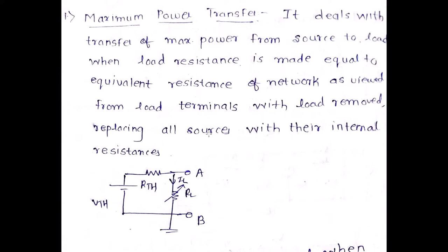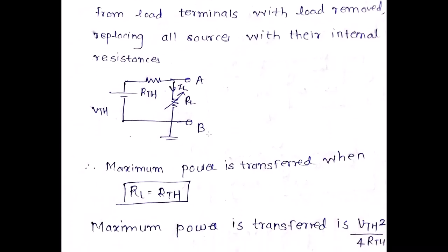So RL = Rth. As mentioned, we find the equivalent resistance from the AB terminals by keeping RL open, short-circuiting the voltage source, and open-circuiting any current source. The maximum power transfer formula is: P_max = Vth² / (4 × Rth), where Vth is the Thevenin voltage and Rth is the Thevenin resistance. If you haven't watched the Thevenin's theorem video, please go and watch it for a better understanding.